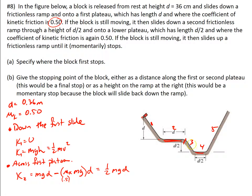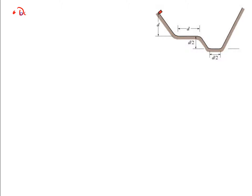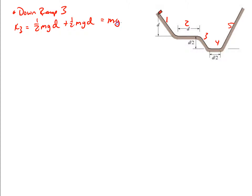Now going down the second ramp: kinetic energy at point 3 equals what we had, 0.5 mgd, plus the additional potential energy gained from descending a height of d over 2, which adds another 0.5 mgd. So K₃ equals 0.5 mgd plus 0.5 mgd, which equals mgd. After the second ramp, we're back to having mgd worth of energy.